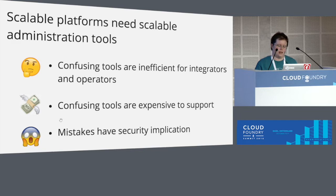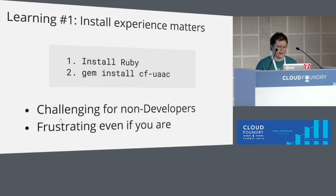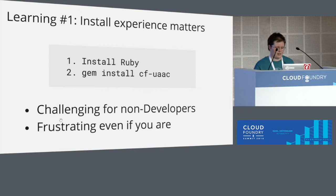Next I want to talk about some observations and learnings from my experience of trying to help people use the existing Ruby CLI. The number one thing is that install experience matters. Today, to get the Ruby CLI, sometimes we tell people just install this gem — gem install cfuaac. And that's fine if you're a Ruby developer. But most people are not Ruby developers. In the real world, people sometimes need to do these things in air-gapped environments or they're operating on a Windows platform where it's difficult to get Ruby installed.